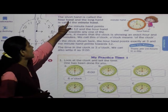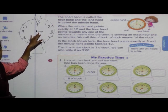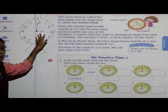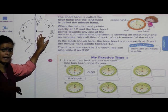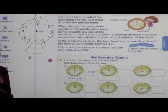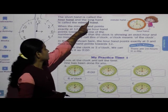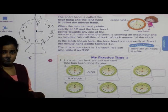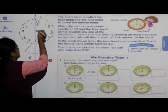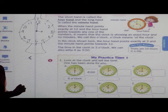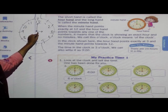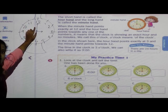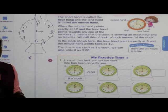The short hand is called the hour hand. Yeh jo short hand hota hai, isay hum hour hand bolte hai. Why? Because it shows hours. That's why it is called the hour hand — H-O-U-R hand. And the long hand is called the minute hand. This is also called the minute hand — kyunki yeh minutes hameh batata hai. Long hand is minute hand, short hand is hour hand.